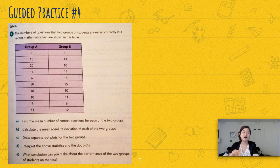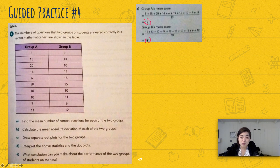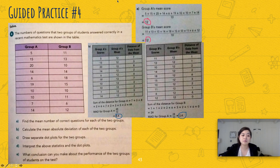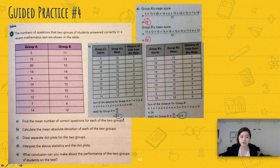Welcome back. Now we're looking at the number of questions two groups got right on a math test. For part A, Group A's mean score is 12 and Group B's mean score is 12 — the same. But let's look deeper at the mean absolute deviation: Group A's MAD is 4.4 and Group B's MAD is 2.4. Since 4.4 is greater than 2.4, Group A's data values are more spread out.